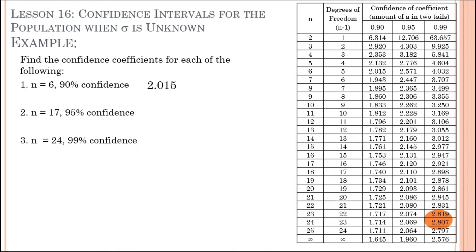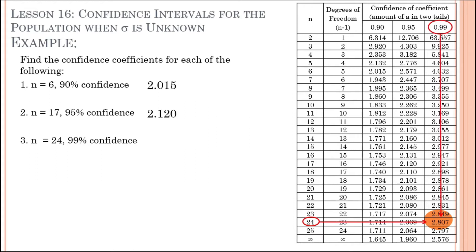For number 2, at n equals 17 and 95% confidence, we find 17 in the first column, then 95% in the fourth column. The intersection gives 2.120. For the third example, n equals 24 at 99% confidence — the intersection gives a t-value of 2.807. That is the t-value we will use.